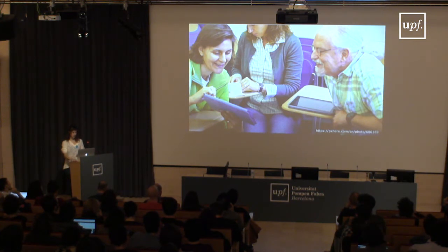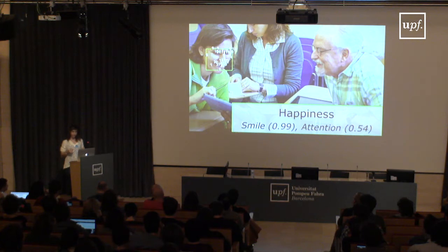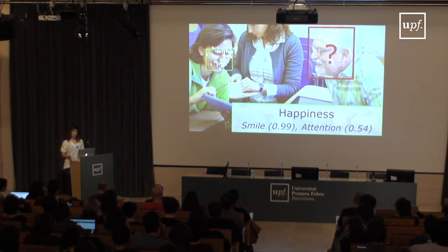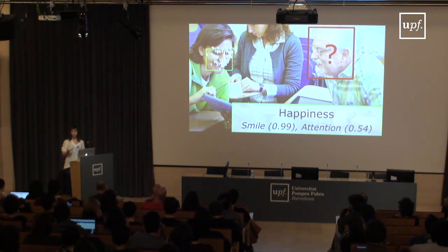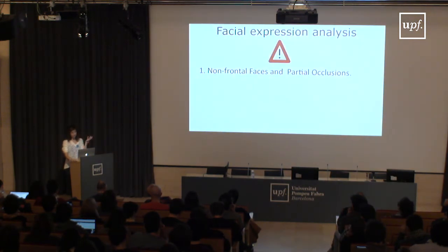This software can detect faces, detect key points of the face, analyze the configuration of those key points, and correlate the configuration with some emotions. They work pretty well but have weaknesses. For instance, when you run this software on an image like this one, it detects the face of this woman and all key points, reporting happiness with 99% accuracy and attention with 54% accuracy. But it did not recognize anything for the man because he's in a profile view, not frontal — so a lot of information is missing.